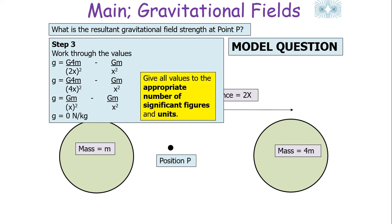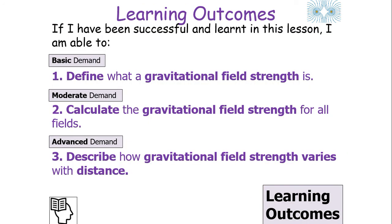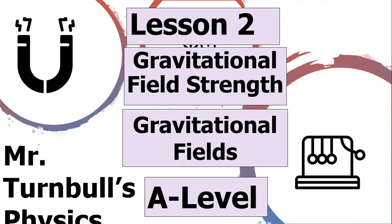Always remember to give answers to the appropriate number of significant figures with correct units. In today's lesson we learned that gravitational fields can be represented with field lines; g is force per unit mass defined by g = F/m; and the magnitude of g in a radial field is given by g = GM/R². If successful, you can define gravitational field strength, calculate it for all fields, and describe how it varies with distance. I hope you've enjoyed today's lesson on gravitational field strength — have a lovely day.